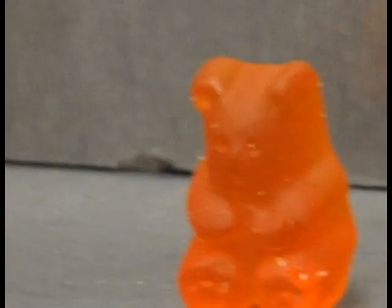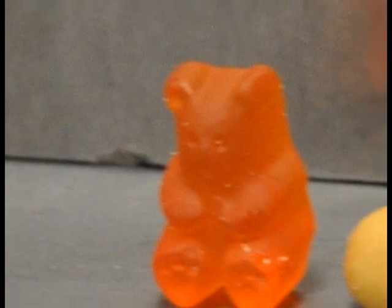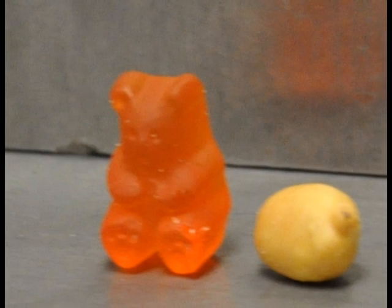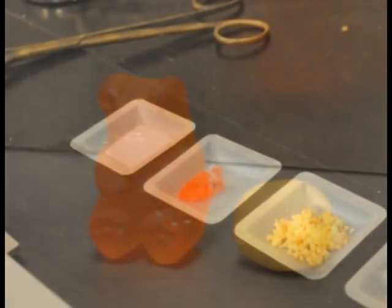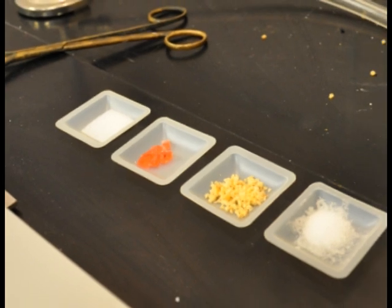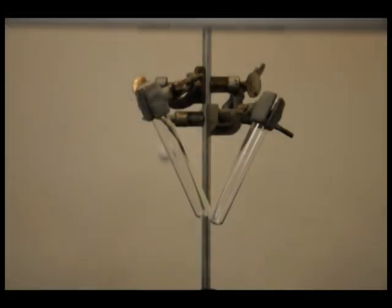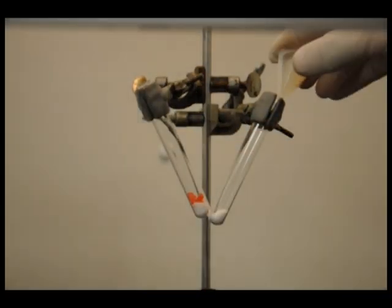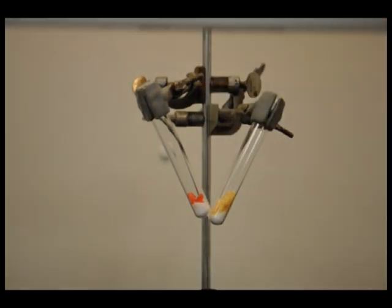It may also be interesting to note that this same reaction can be used to qualitatively compare the caloric content of various foods. For example, if we take half a gram gummy bear and half a gram peanut and place both in the molten potassium chlorate, we see a difference in the duration of burning as an indication of the caloric content of each food item per gram.